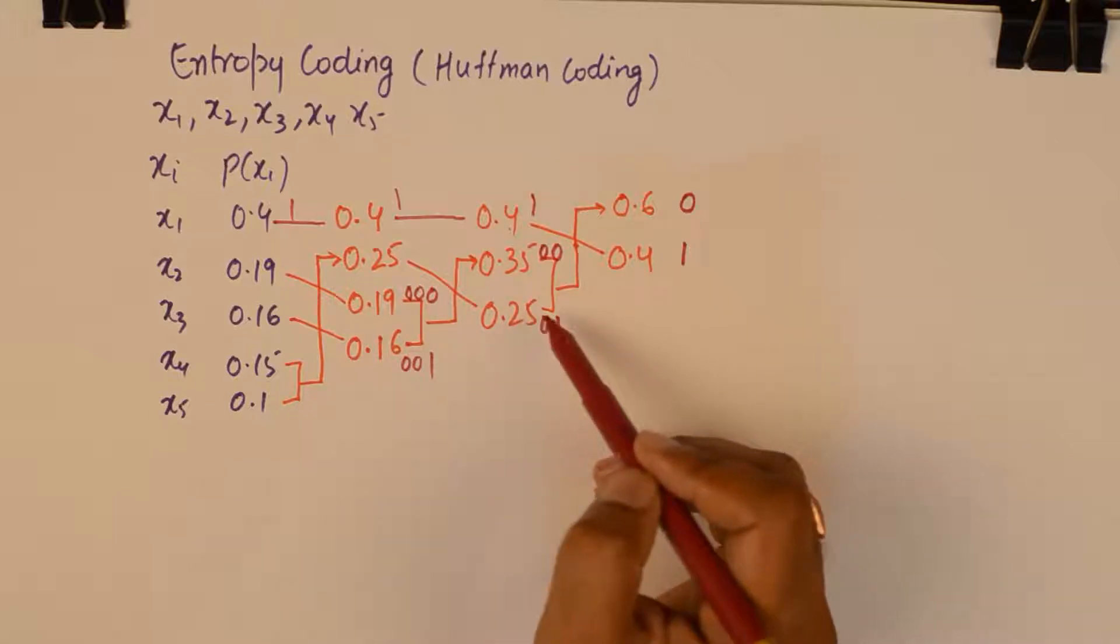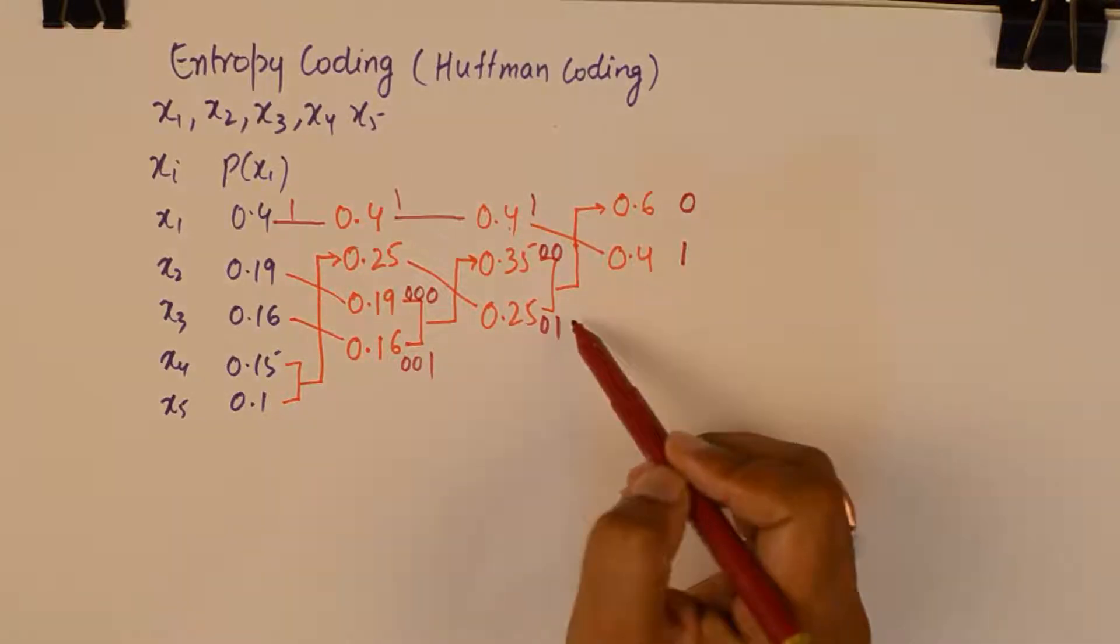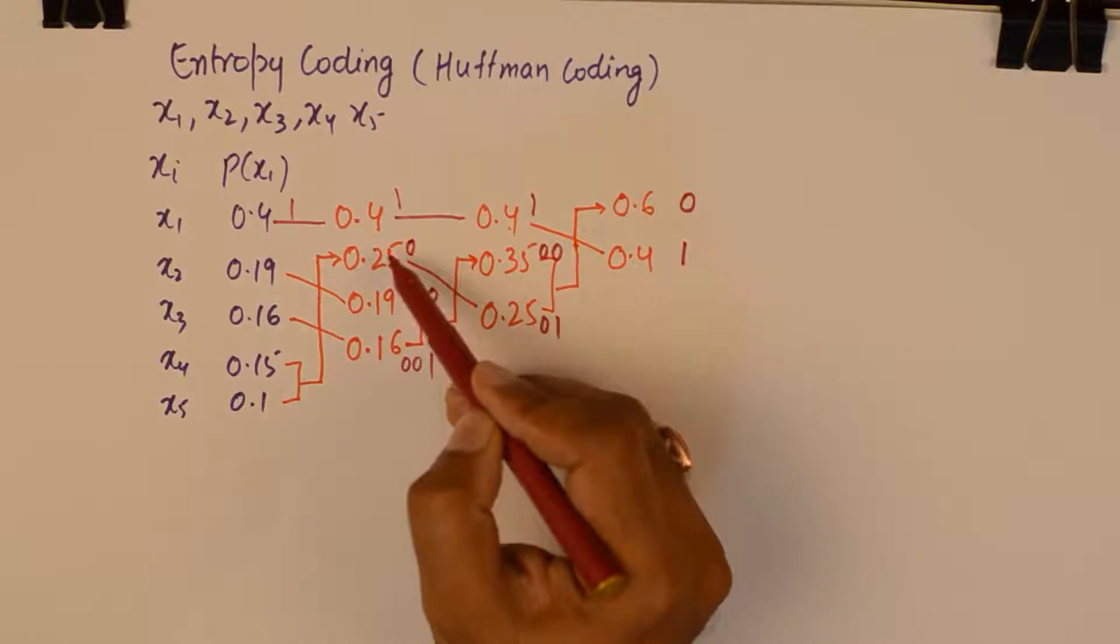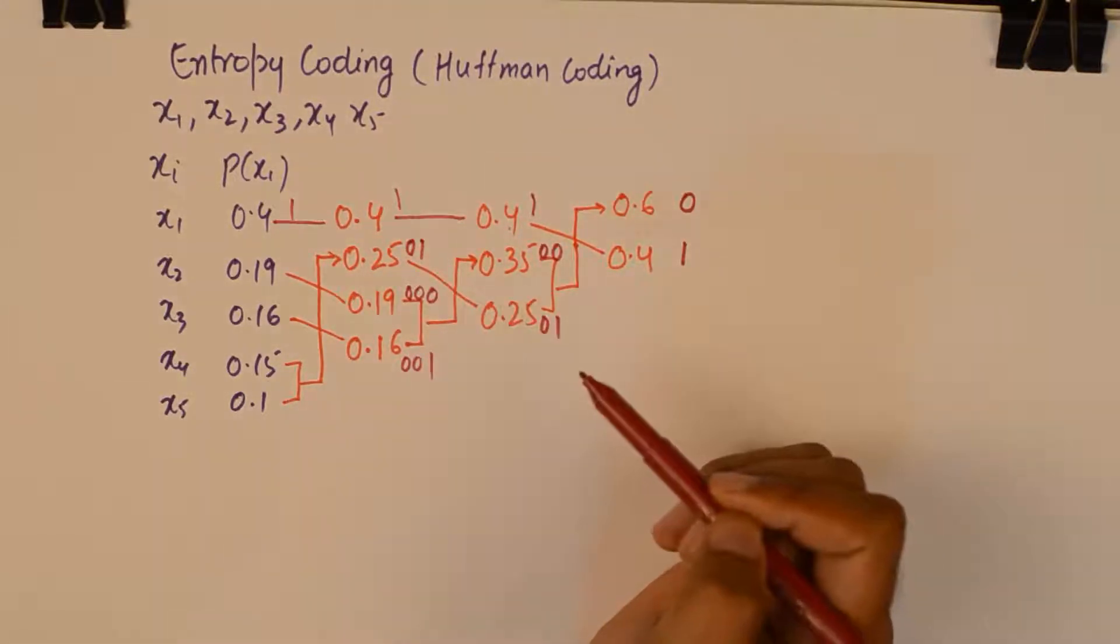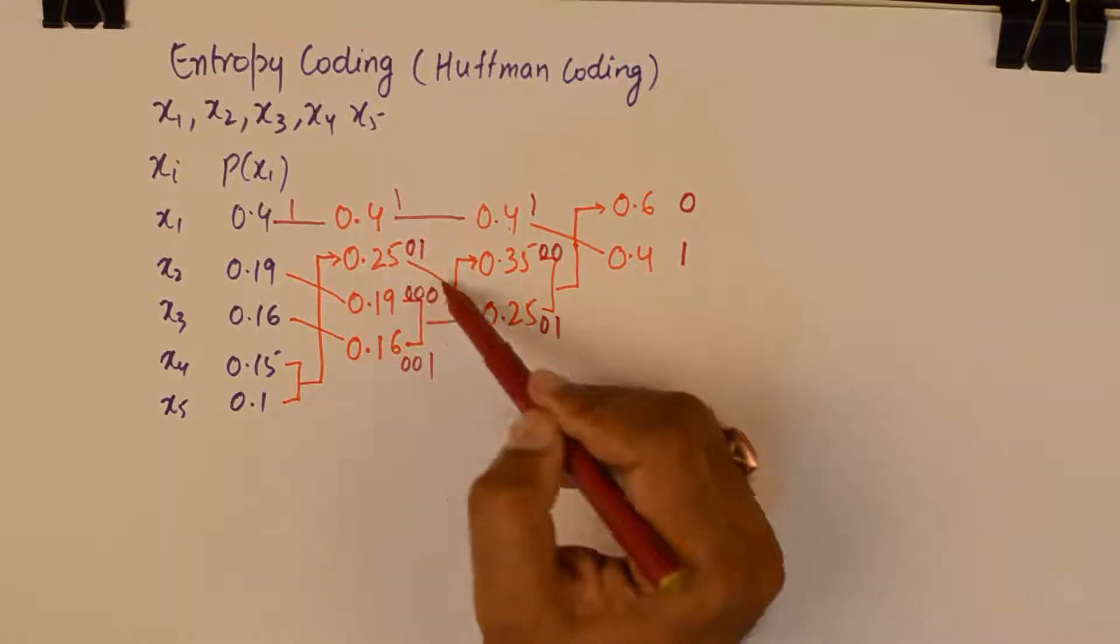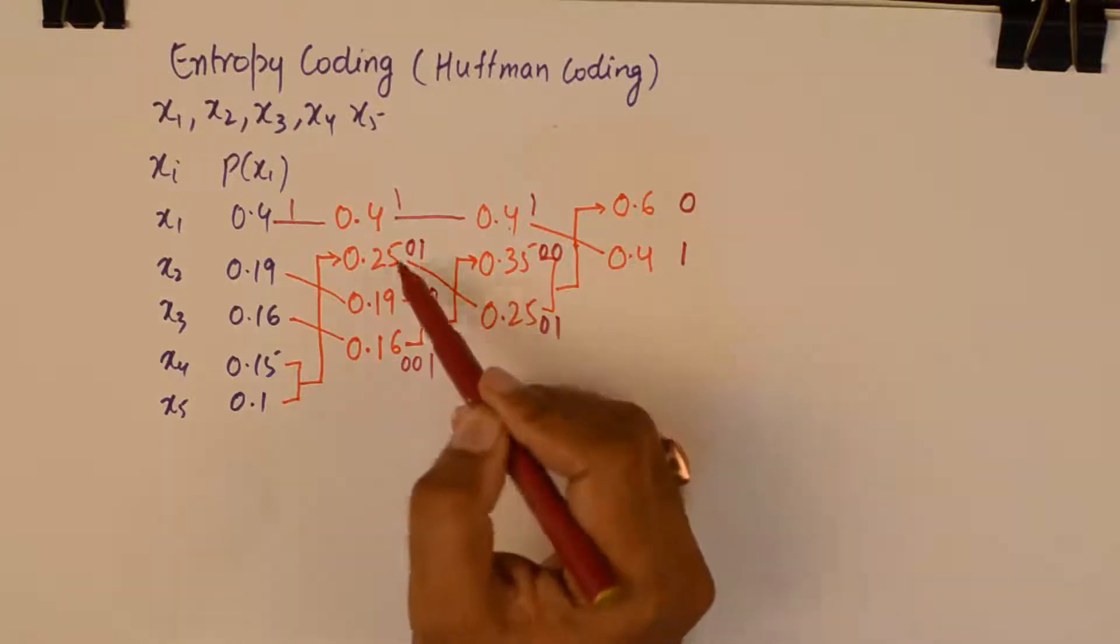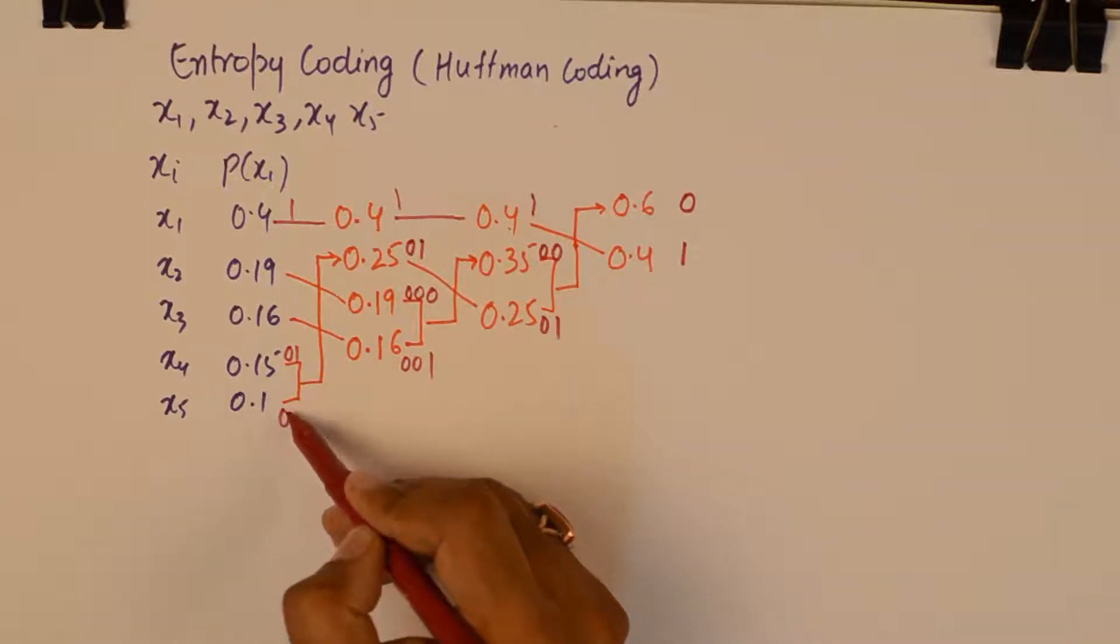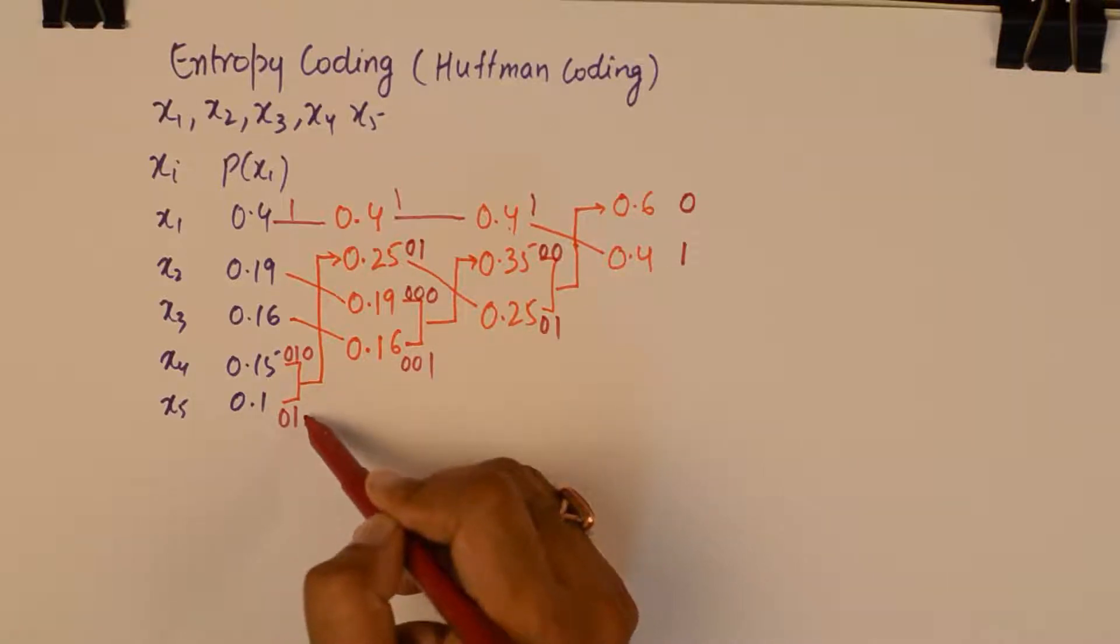Now please understand this 0.1 goes to this 0.25. So this gets a 0 1 from its parent here. And this 0 1 gets transferred here. And 0.15 by virtue of being on the top gets a 0 here. And 0.1 because of being at the lower position gets a 1 here.